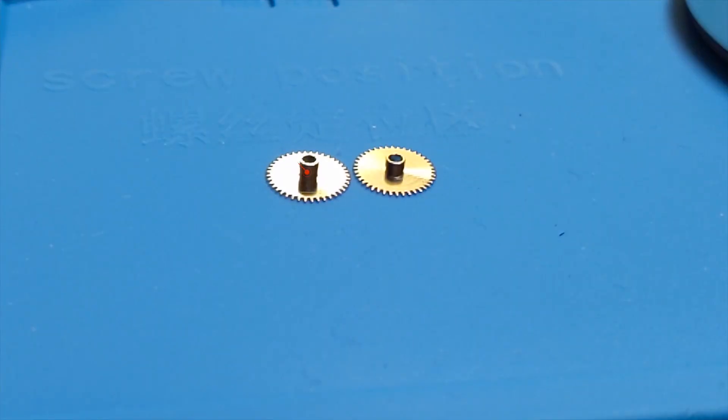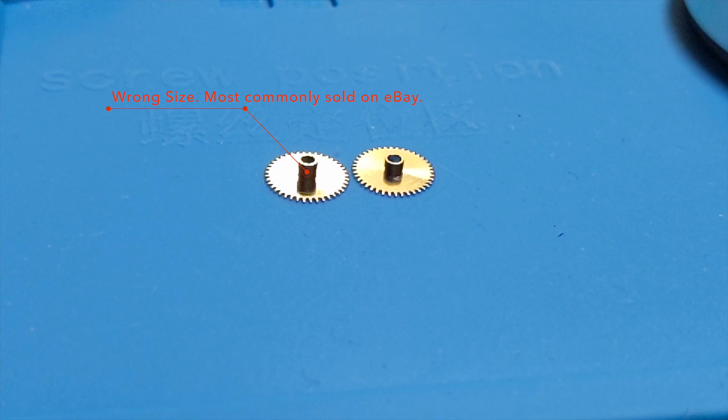Now here's an important detail. For this particular movement, if you lose the hour wheel, it is very unlikely you can just go ahead and buy it without the movement online. The reason for that is this hour wheel is slightly shorter than the most common version sold online. So the one on the right is the correct one.